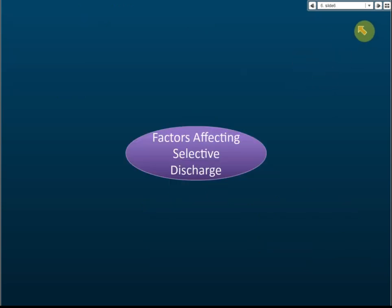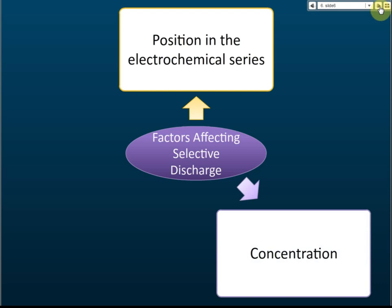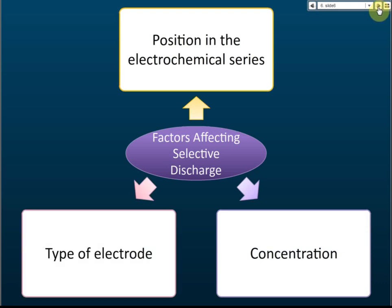The three factors affecting selective discharge are: first, position in the electrochemical series; second, concentration of the solution; and third, the type of electrodes used.